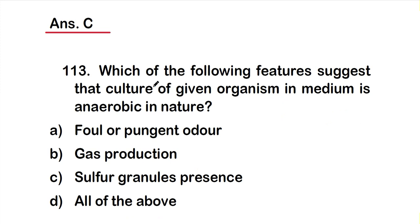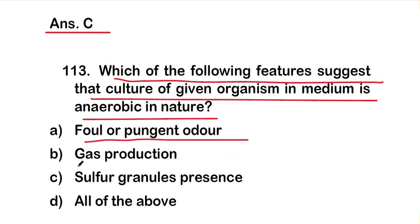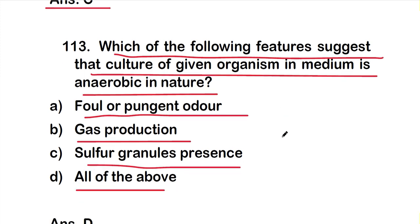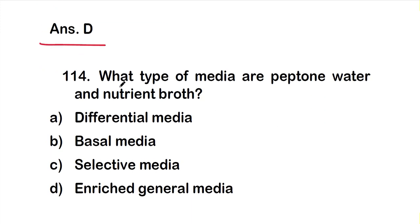Question 113: Which of the following features suggest that a culture of a given organism in the medium is anaerobic in nature? Option A, foul or pungent odor; option B, gas production; option C, sulfur granules presence; or option D, all of the above. The right answer is option D, all of the above.